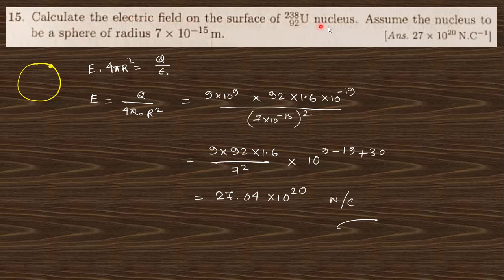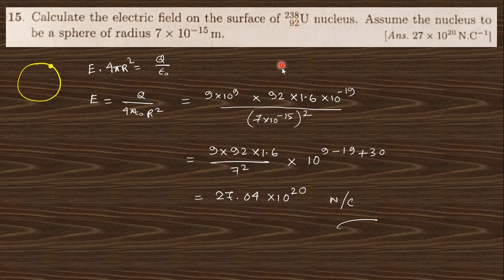Question 15: calculate the electric field on the surface of a nucleus, modeled as a sphere of given radius. By Gauss's theorem, E × 4πr² = Q/ε₀, so E = Q/(4πε₀r²). Here, 1/(4πε₀) = 9×10⁹, the charge is 92 protons each of charge 1.6×10⁻¹⁹ C, and the radius r is 7 femtometers (7×10⁻¹⁵ m). Substituting these values gives the answer.